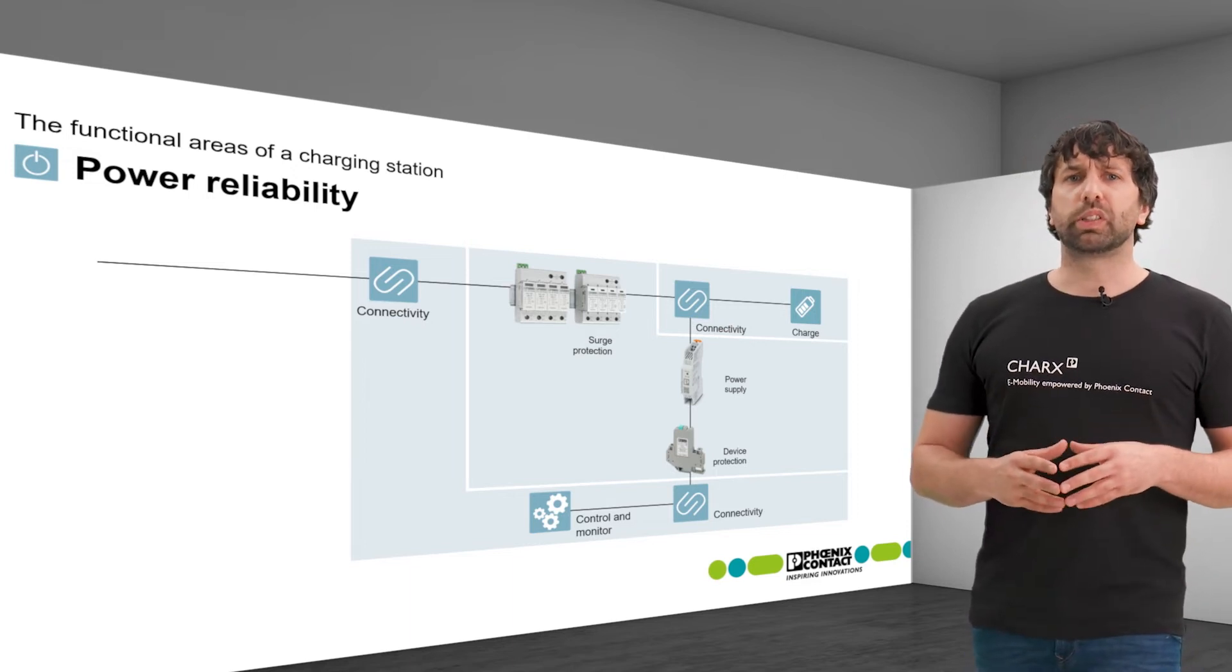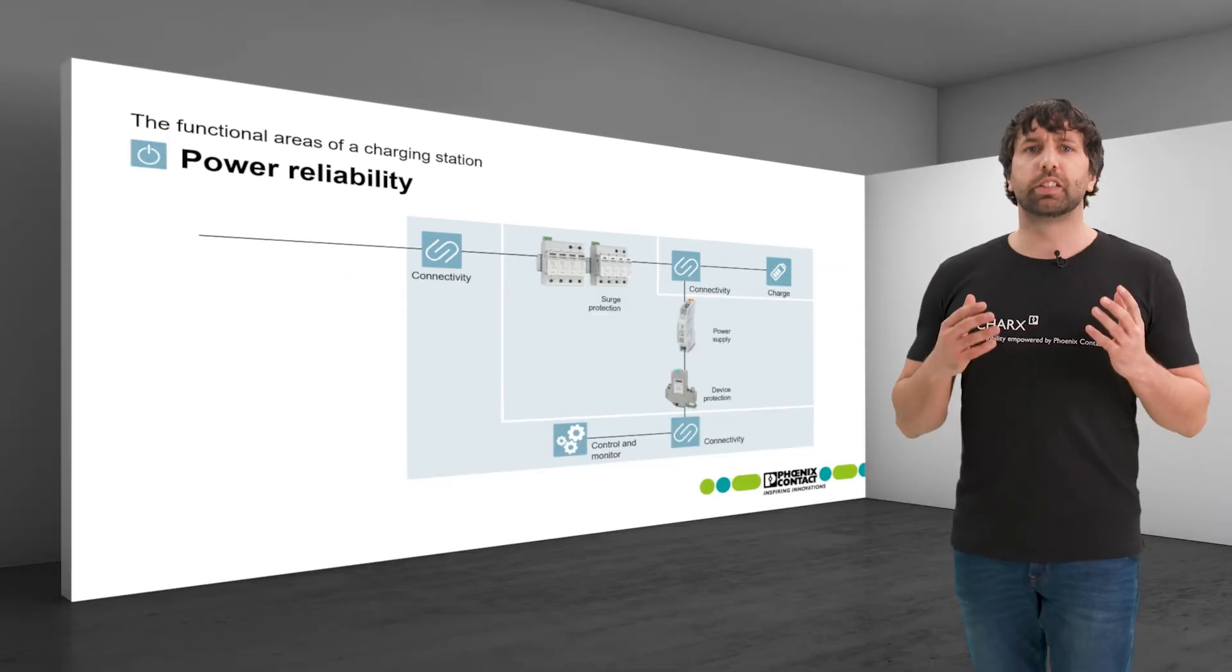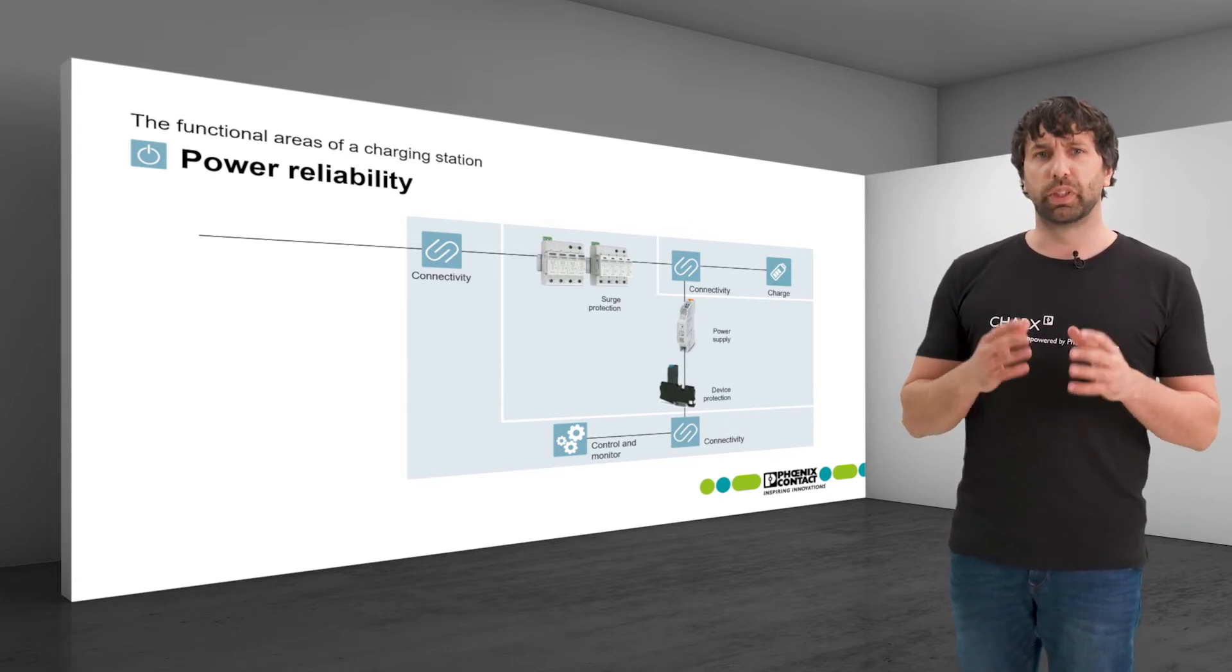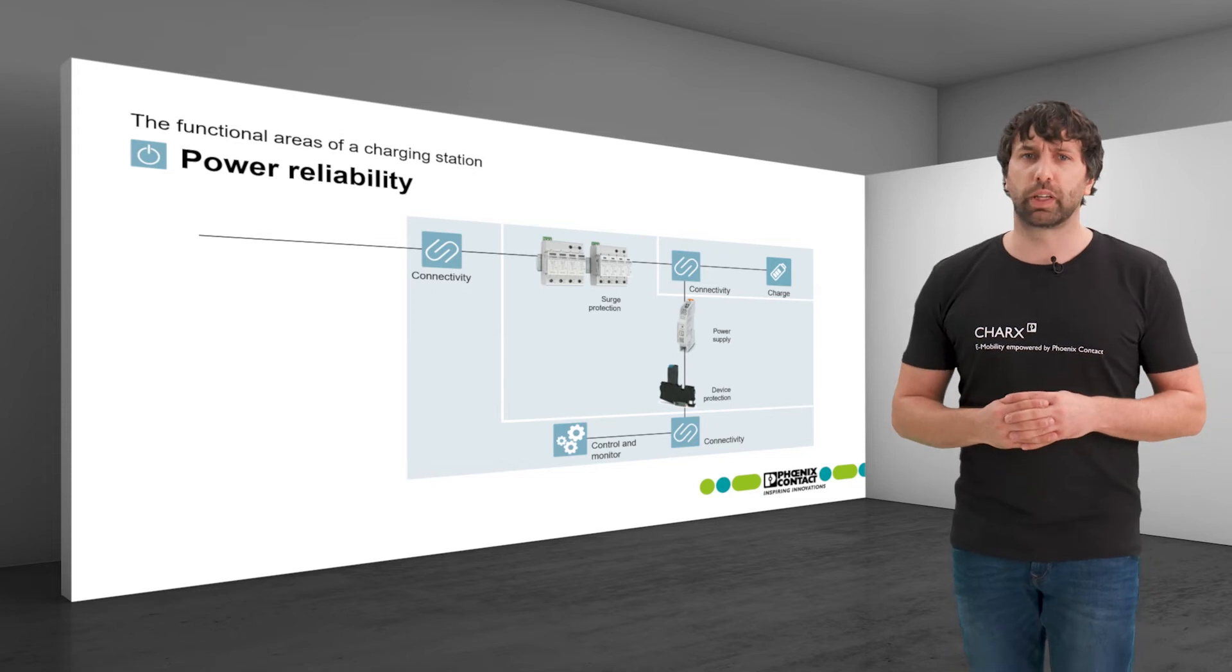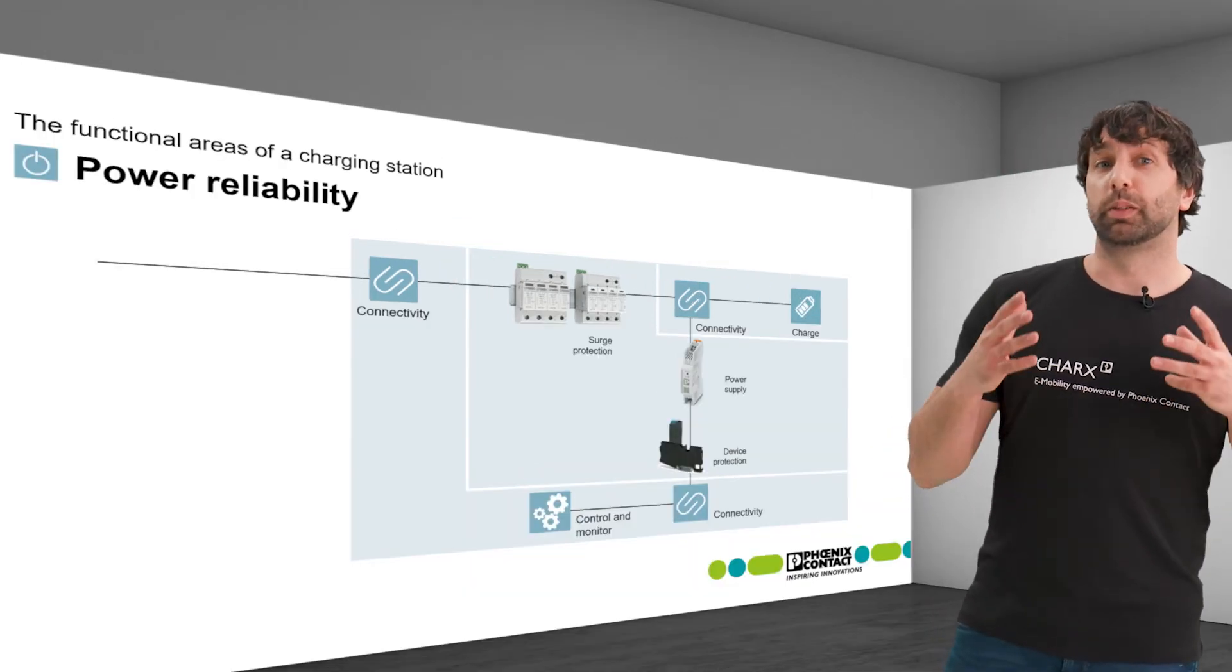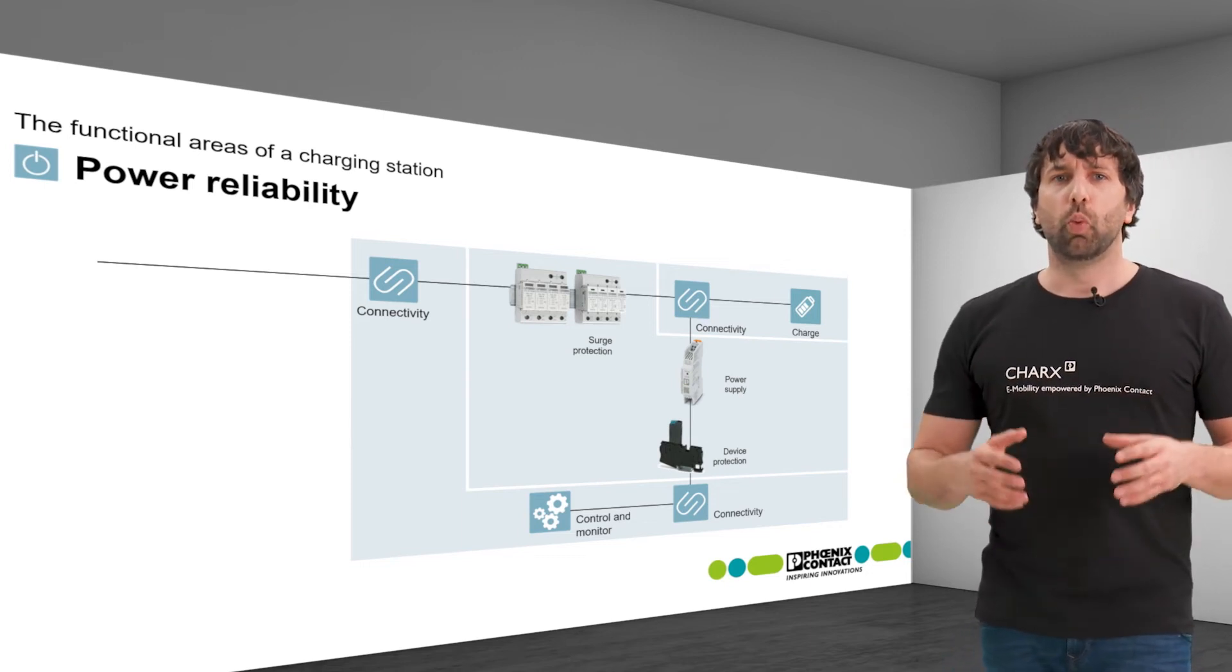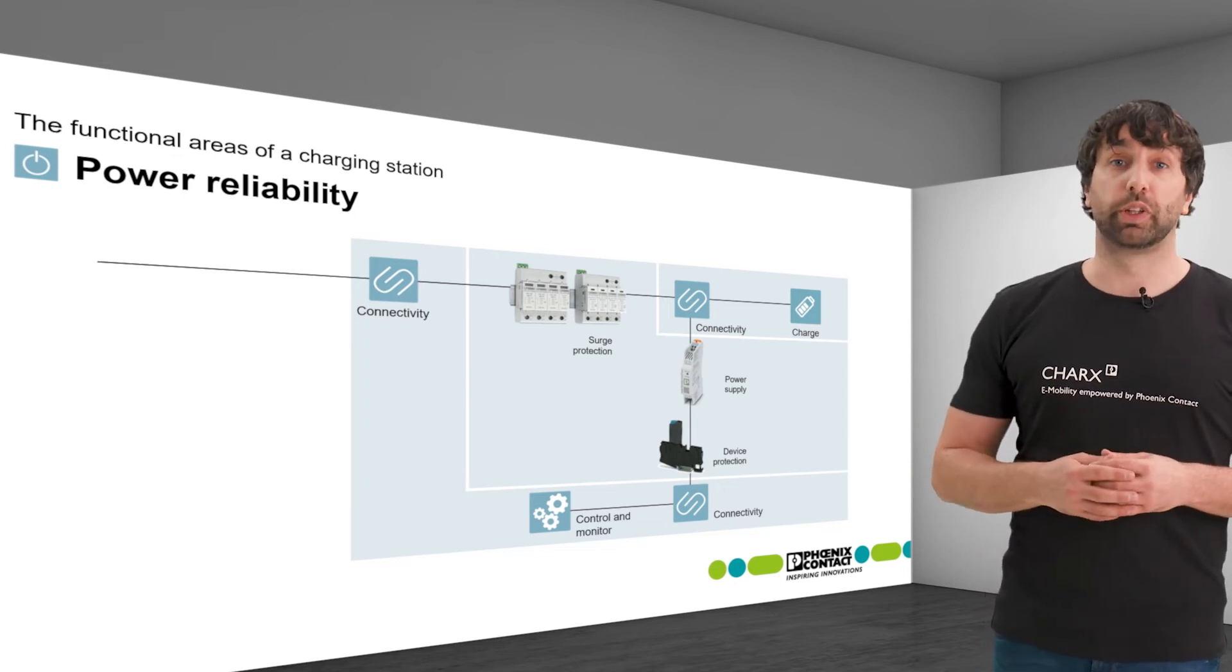It is also possible to create an inexpensive space saving combination of a fuse terminal block and a thermal miniature circuit breaker which can also be reset. This combination also makes it possible to easily retrofit existing charging stations with vehicle flat type fuses thanks to the identical plug configuration.